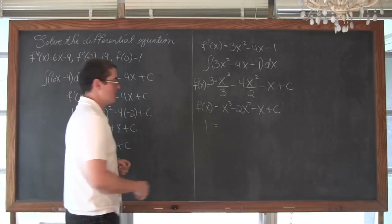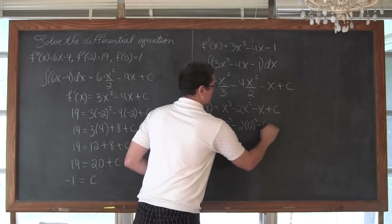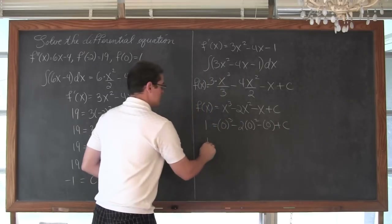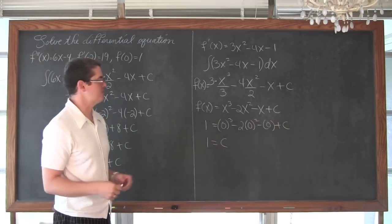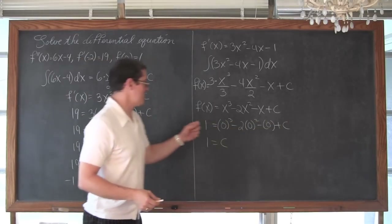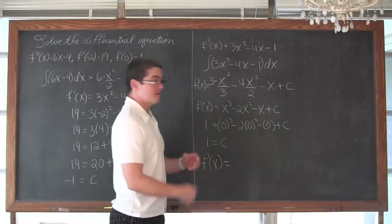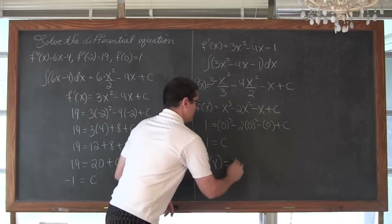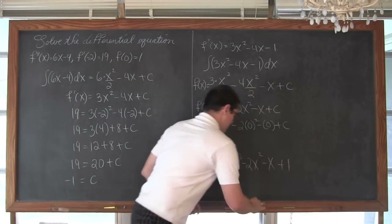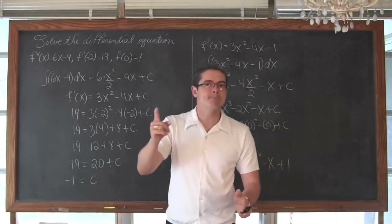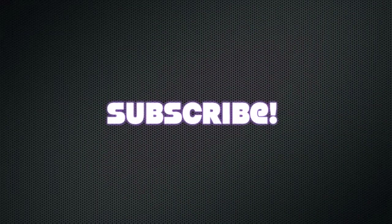When x equals 0: 0 cubed minus 2 times 0 squared minus 0 plus C equals 1. Everything cancels out and we have C equals 1. So f of x, our original function, is x cubed minus 2x squared minus x plus 1. And that means I am done. I am Mr. Tarrou. Go do your homework!